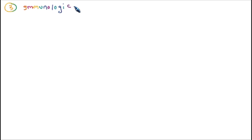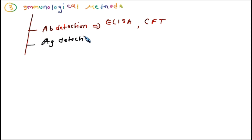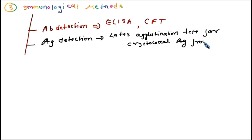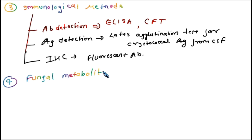We have learned about microscopy and culture. The third method in lab findings is immunological methods. These include: antibody detection by ELISA and CFT (Complement Fixation Test); antigen detection by latex agglutination test for cryptococcal antigen from CSF; immunohistochemistry using fluorescent-tagged antibody to find antigen; and fungal metabolite detection by gas-liquid chromatography.